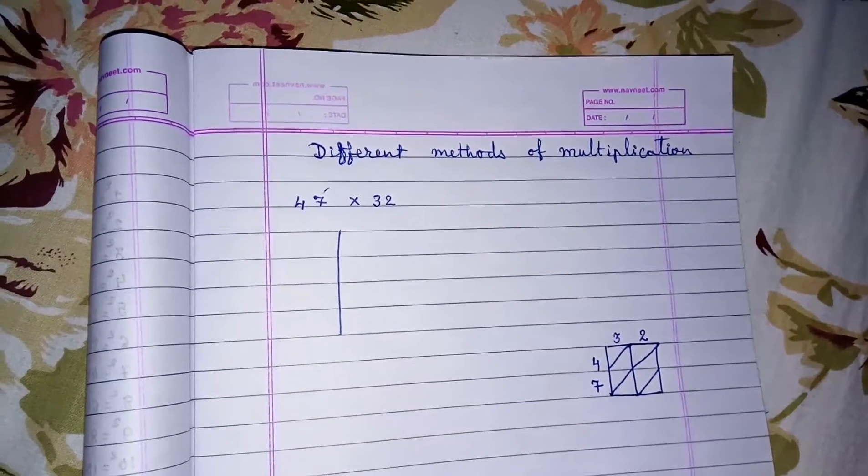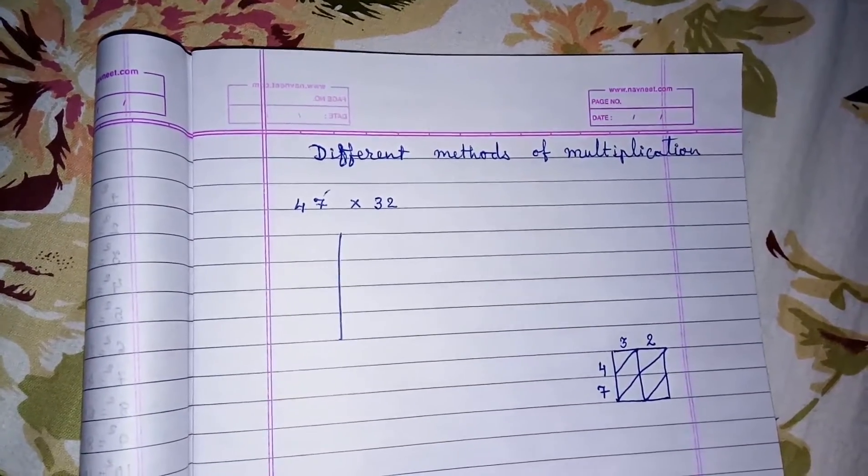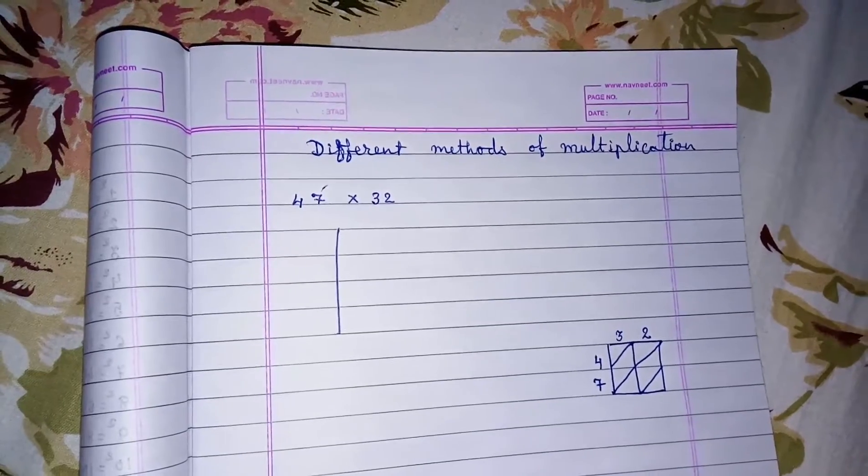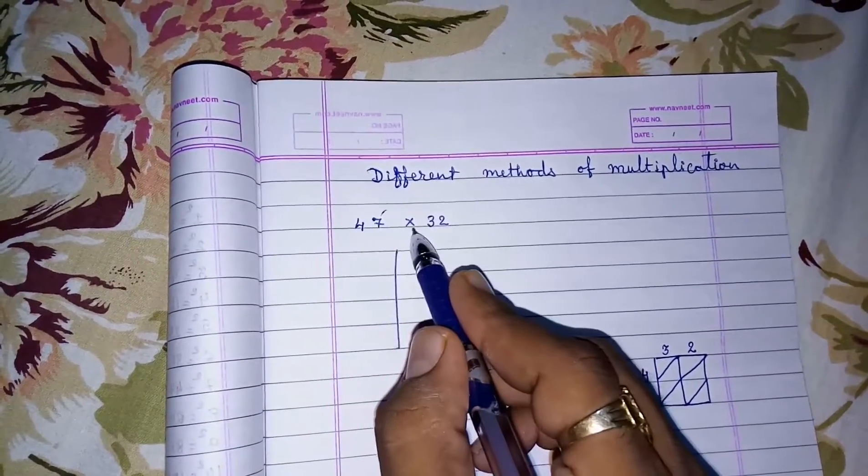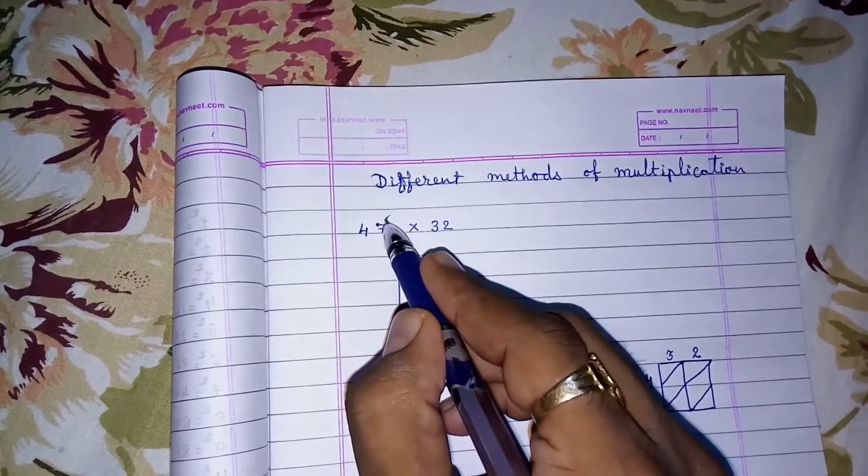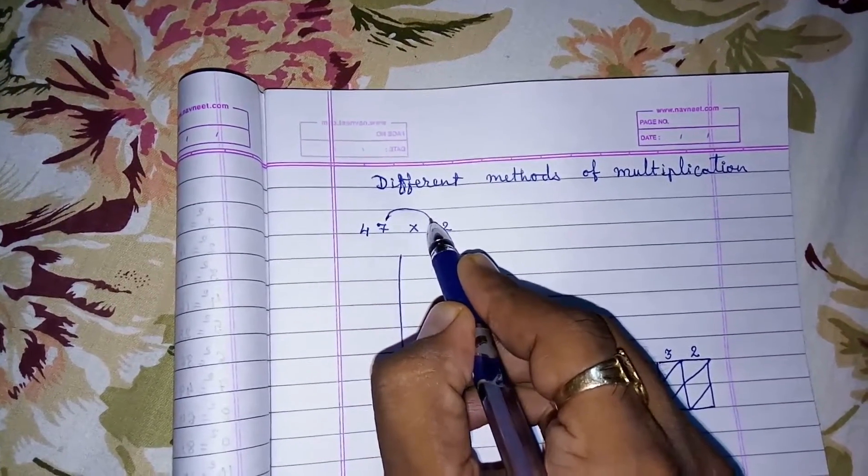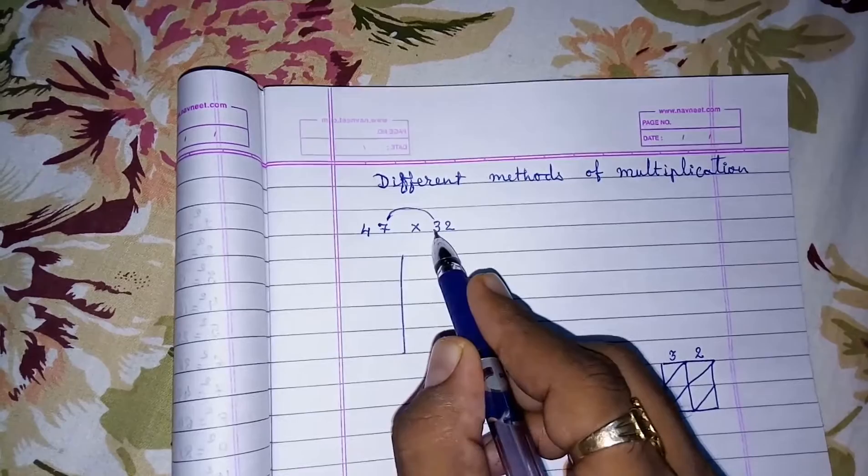Hello friends, today we are going to study different methods of multiplication. First, look at the number we are going to multiply: 47 into 32. First we have to multiply the last number of the first term and first number of the second term.